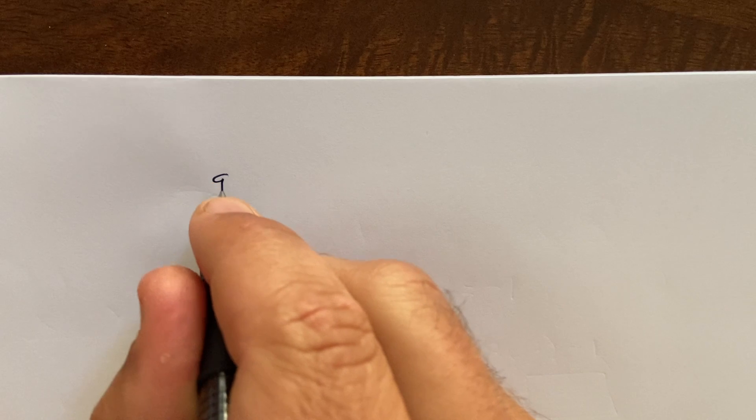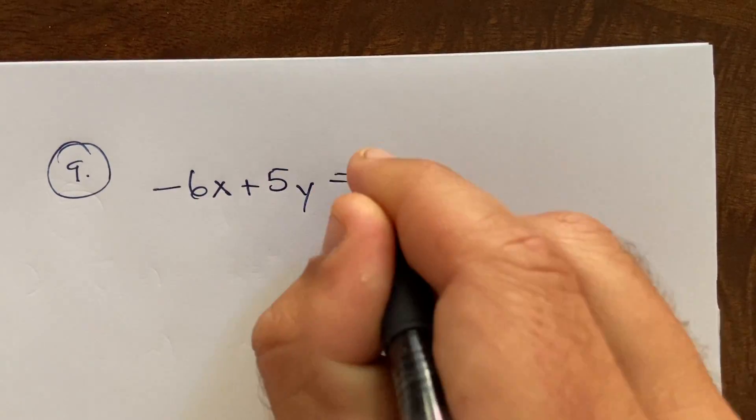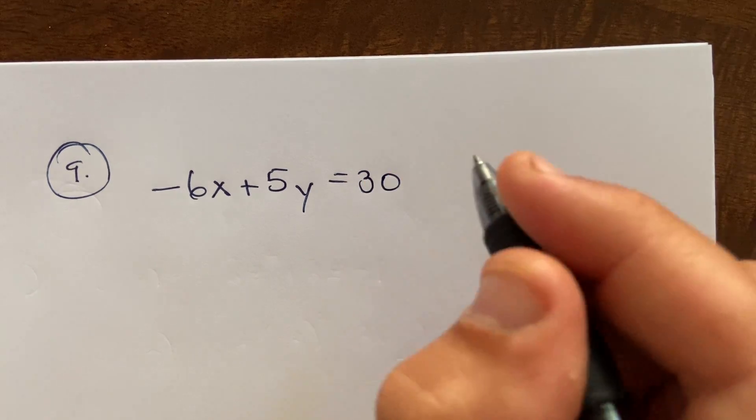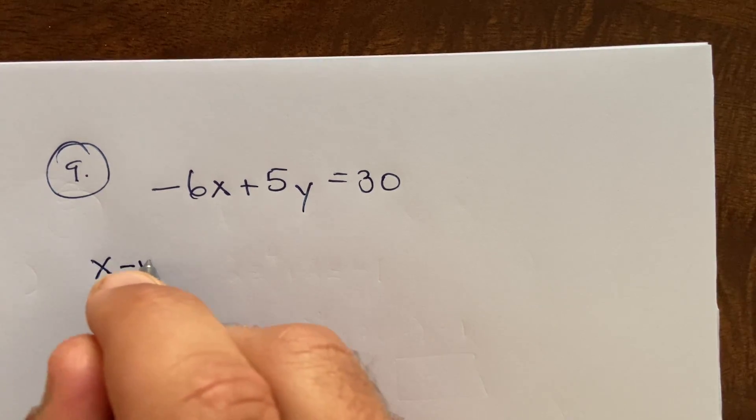So that's number seven. I'll actually go on to number nine, so skipping down to number nine. It says for the linear equation negative six x plus five y equals thirty, find all intercepts x and y. Write your intercepts as ordered pairs.